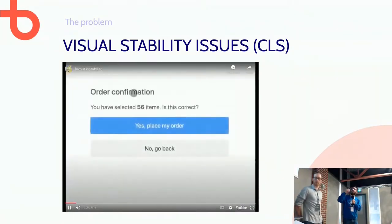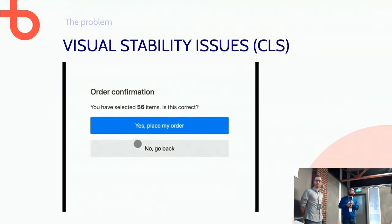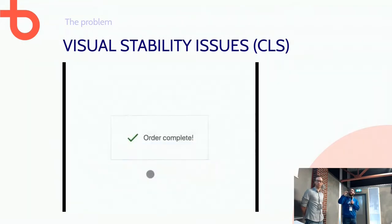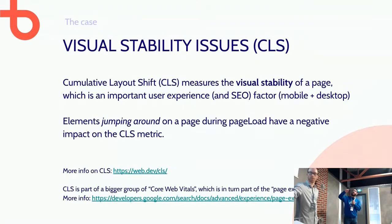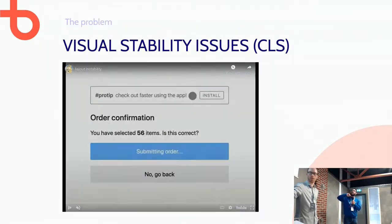An example: let's say you have an order page and you want to place your order. You try to press 'no, go back,' and suddenly something pops up on the page, it shifts, and you end up pressing submit instead. I'm pretty sure everyone has encountered something like this, and it's very annoying.